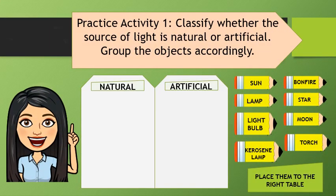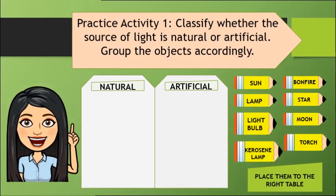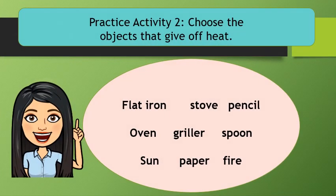Now let's have a practice activity. Classify whether the source of light is natural or artificial. Group the objects accordingly. Practice activity 2: choose the objects that give off heat.